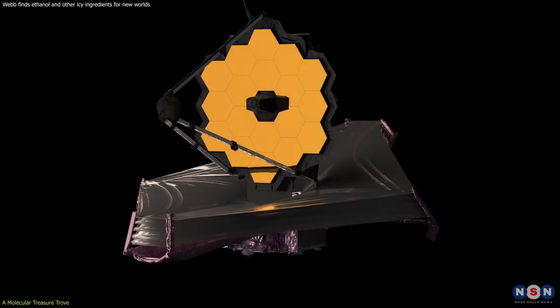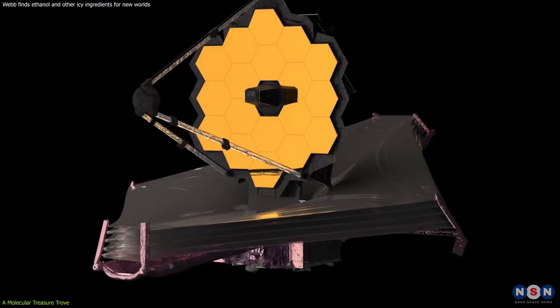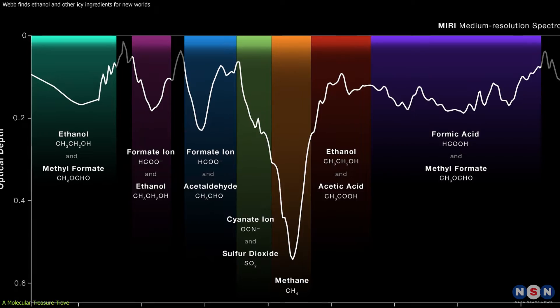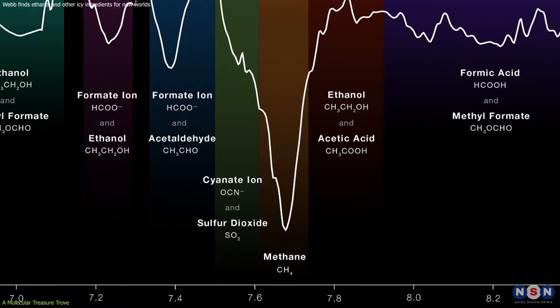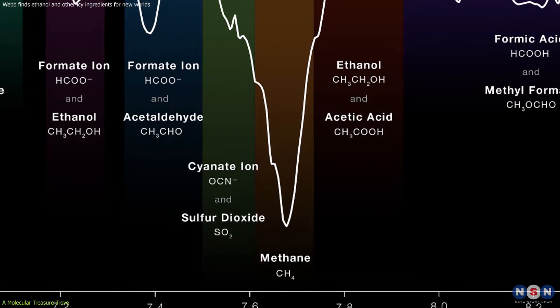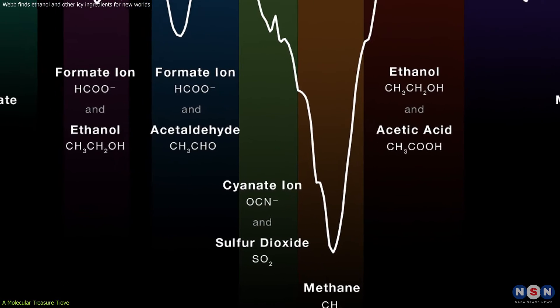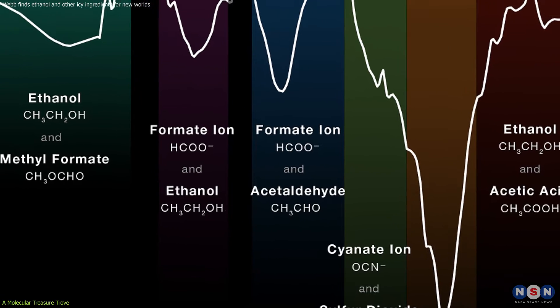With unprecedented sensitivity and spectral resolution, it has detected a variety of molecules in these icy regions. These molecules range from simple ones like methane, a basic hydrocarbon, to more complex compounds like acetic acid and ethanol.